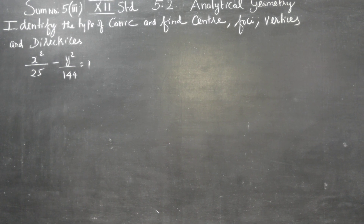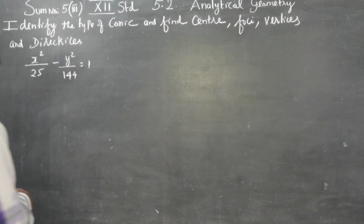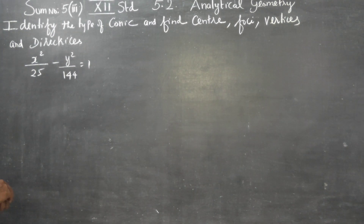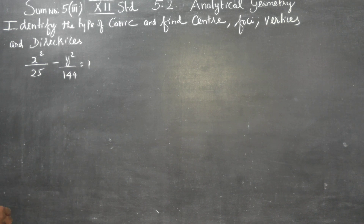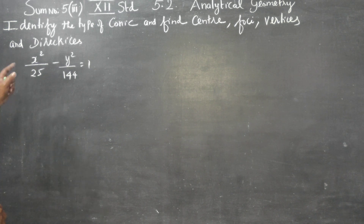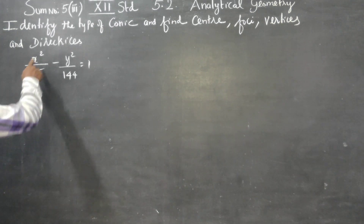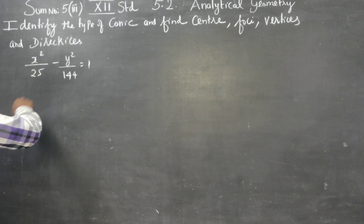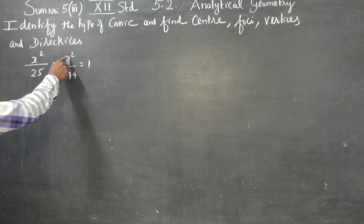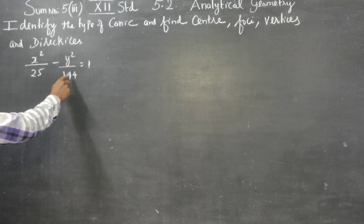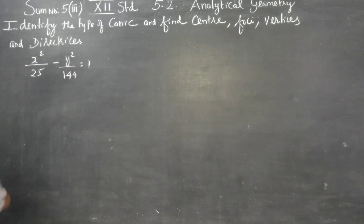Dear 12th standard students, in 5.2 analytical geometry, identify the type of the conic and find the center, foci, vertices, and directrices. The equation given is x² by a² minus y² by b² is equal to 1.